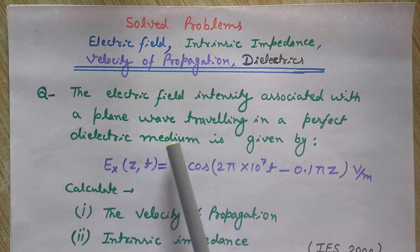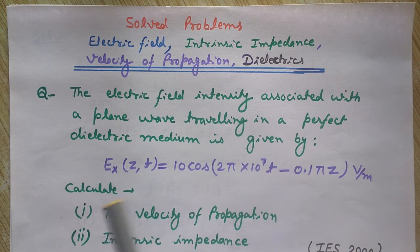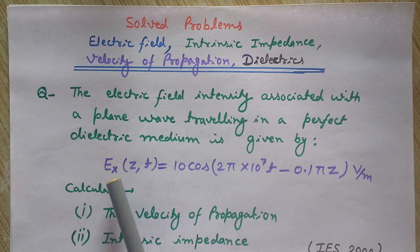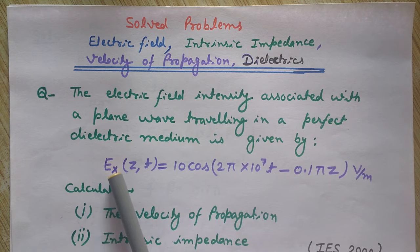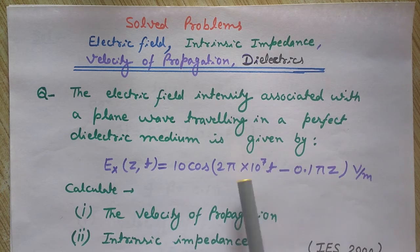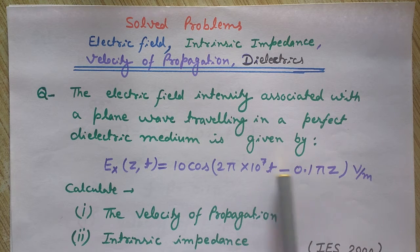The equation is Ex(z,t), which means Ex stands for the x-component of the electric field. It is a function of z and t. As you can see here, it is a function of time t and position z.